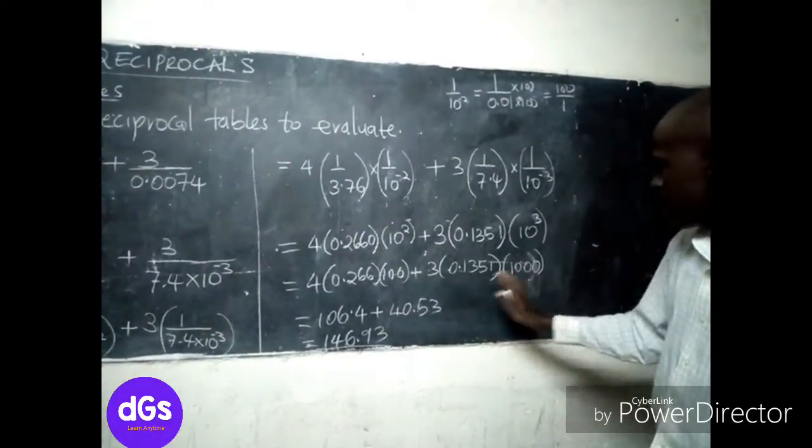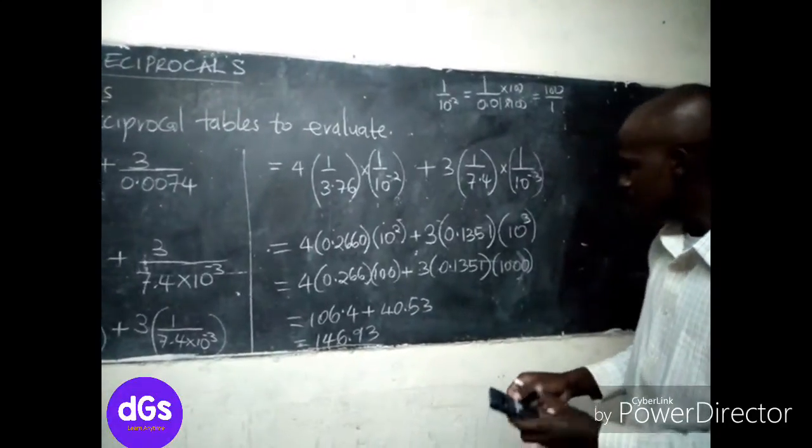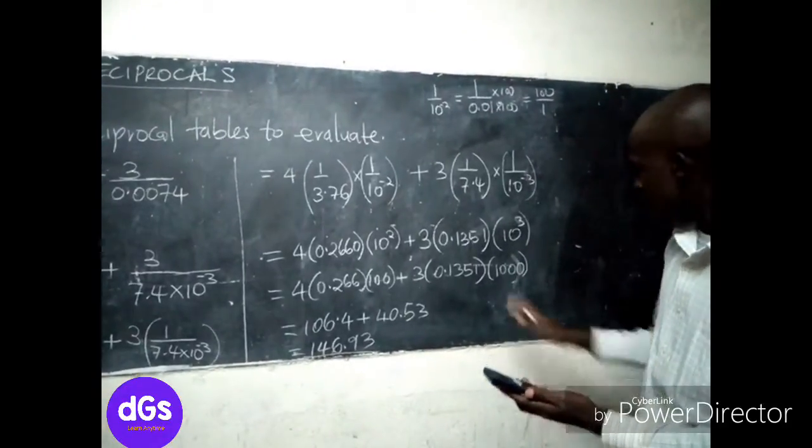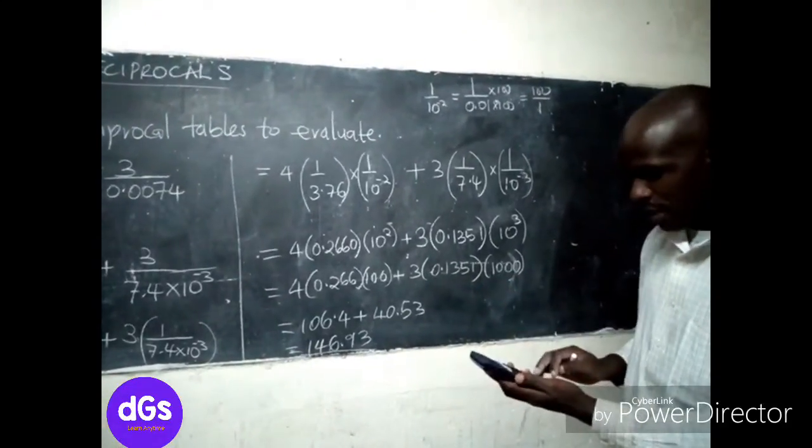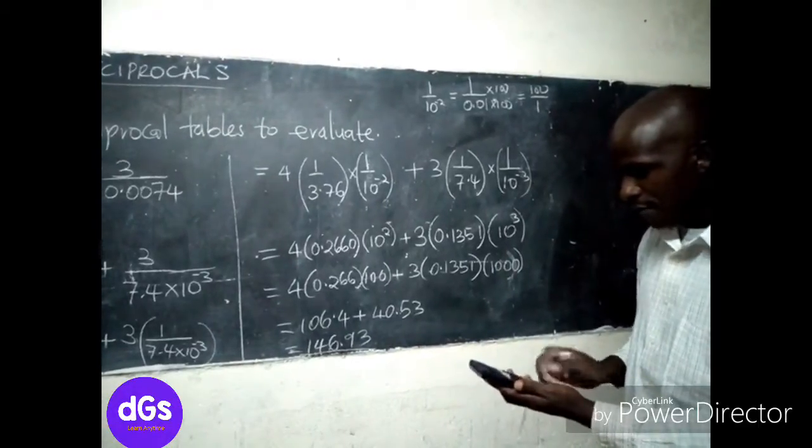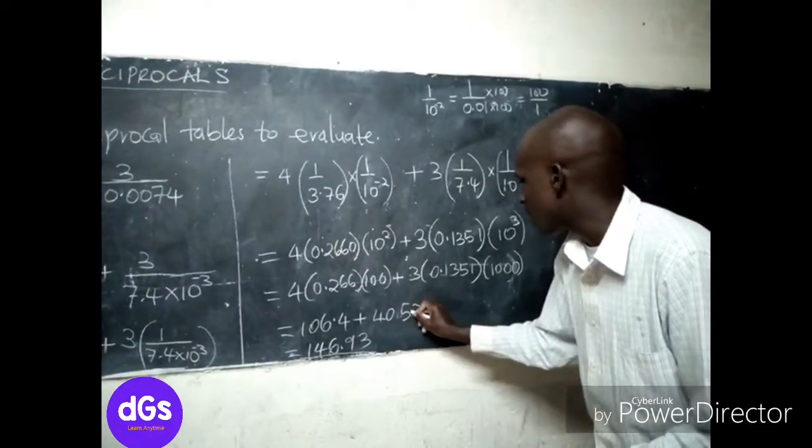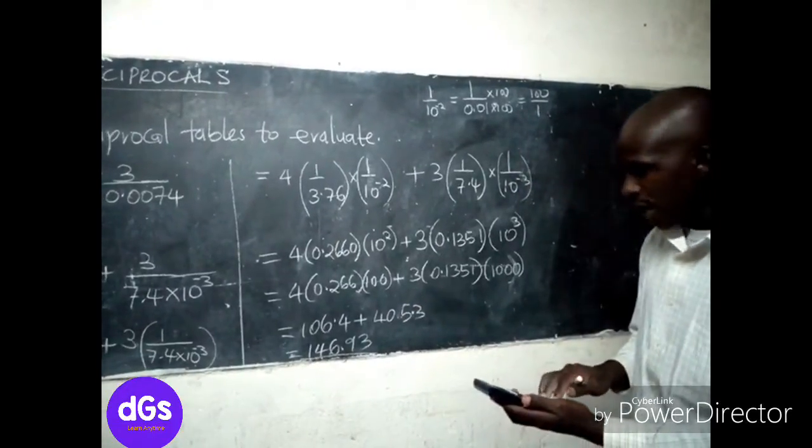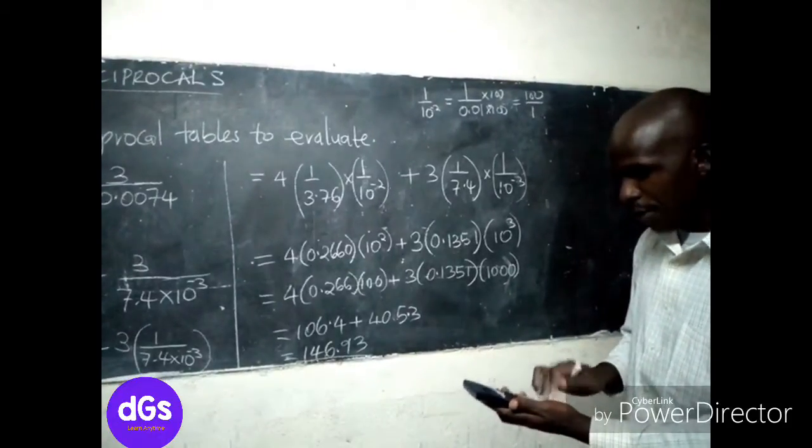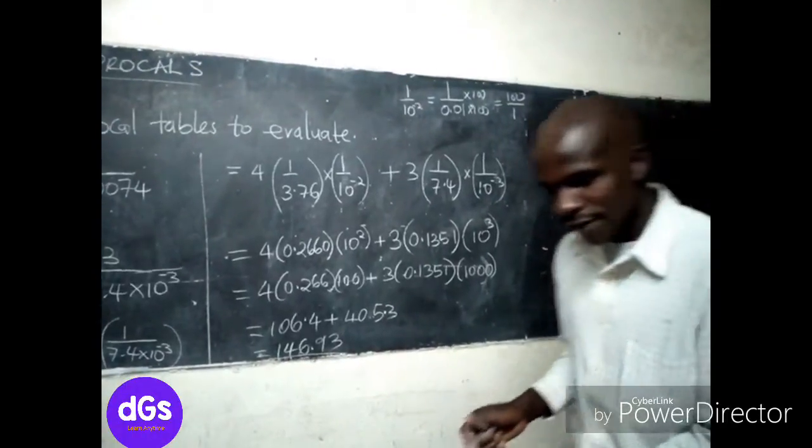Then this would be, this will be 3 times 1000 times 0.1351, and we are getting 405.3. Then we should add to 106.4, and that gives us 511.